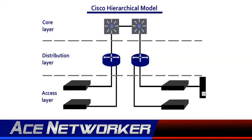Cisco sort of set the standard for how they define a computer network hierarchy. This hierarchy helps you determine where you need the most security on a network, or where certain devices connect and work best. So let's get straight to the Cisco Hierarchical Model.